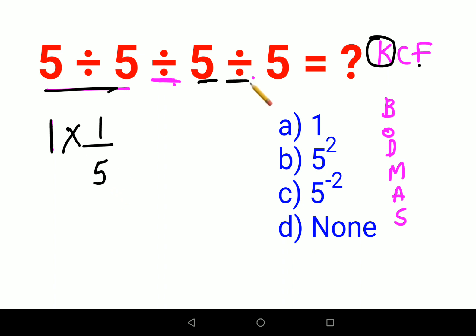Applying the same logic over here. We will keep the first number as it is. So that is 1 upon 5. We are writing 1 upon 5. Changing the division sign to multiplication and then flipping. So you get 1 upon 5. So final answer is 1 upon 25.